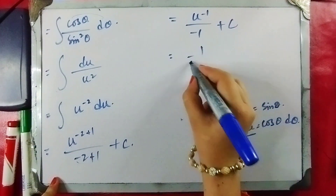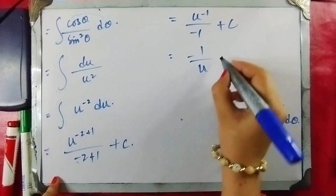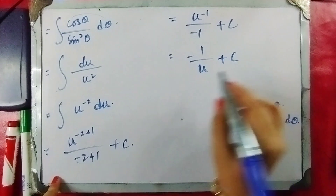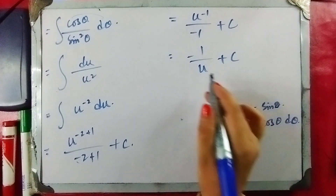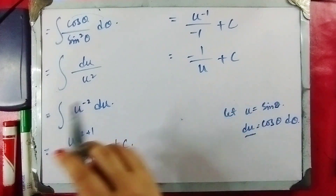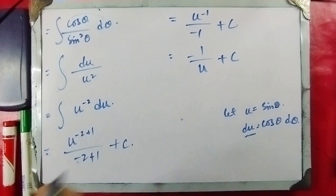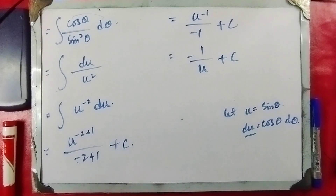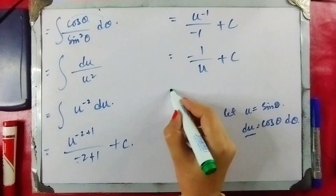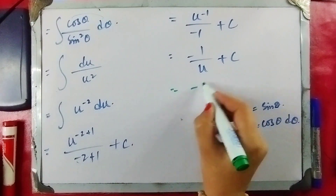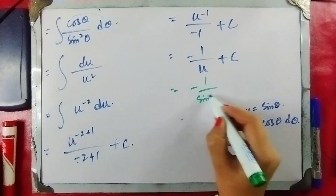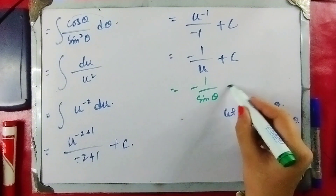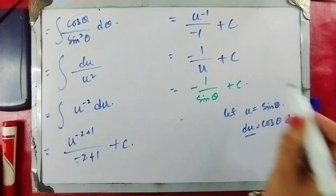The result after integration is dx minus 1 plus C. Substituting u back, we get minus 1 over sine of theta plus constant C.